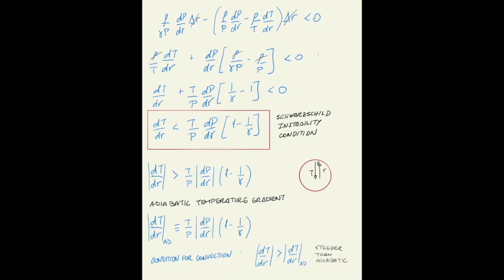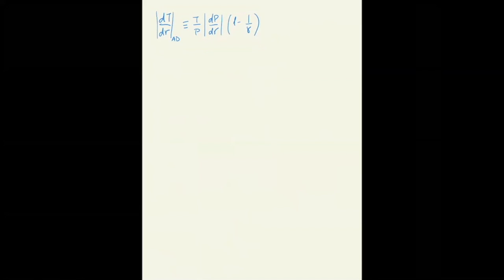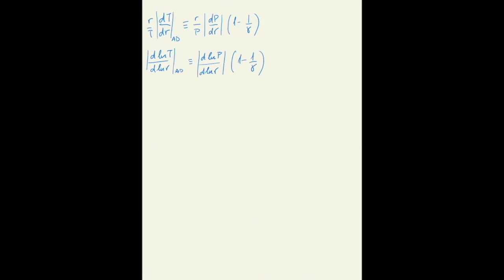Whenever the temperature gradient is steeper than adiabatic, convection ensues. Let's write this in a more compact way. Since we have temperature and pressure, divide both sides by the temperature — now this becomes a logarithm. Multiply both sides by the radius and this becomes the derivative of log T with respect to log r, equal to the derivative of log P with respect to log r, times one minus one over gamma. A simpler way to write this is as d ln T over d ln P equal to one minus one over gamma. Since pressure and temperature both increase with depth, we can drop the modulus.